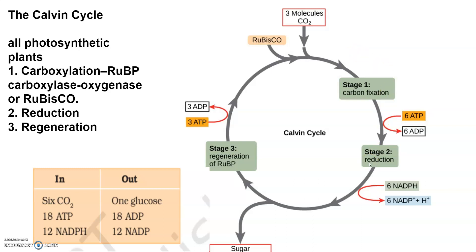Reduction is a series of reactions that leads to the formation of glucose. Two molecules of ATP and two molecules of NADPH are required for the reduction of one molecule of carbon dioxide. Six turns of this cycle are required for the removal of one molecule of glucose from the pathway. Regeneration is the regeneration of RuBP, that is ribulose bisphosphate, for the continuation of the cycle, and this process requires one molecule of ATP. In total, six carbon dioxide molecules enter with 18 ATP and 12 NADPH required, and when one molecule of glucose is produced, 18 ADP and 12 NADPH are utilized.